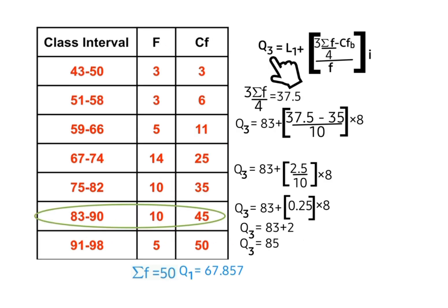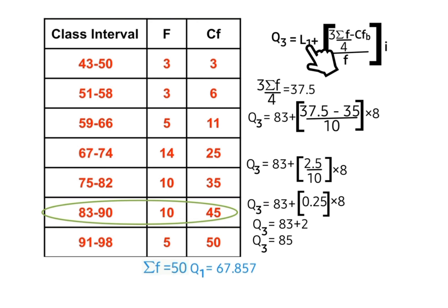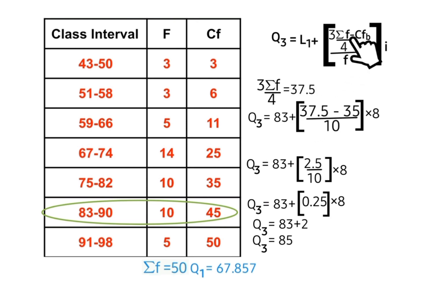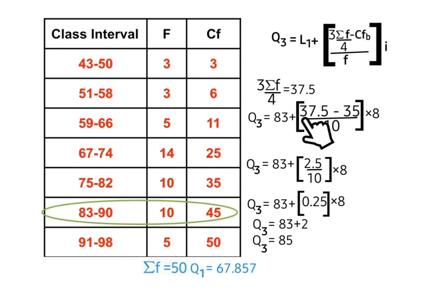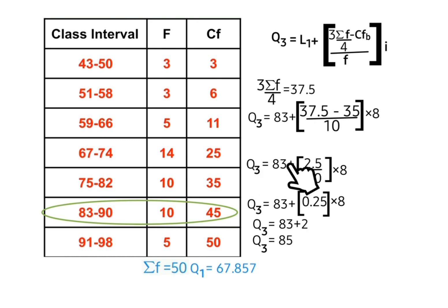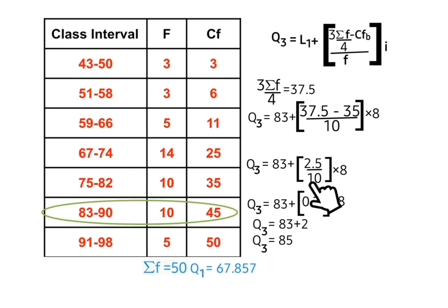Following the formula, L1 — the lower class limit of the third quartile class — is 83. We have: 3 times summation f over 4 equals 37.5, minus the cumulative frequency before the third quartile class, which is 35, over the frequency of the third quartile class, times the class width of 8. That gives: 83 plus (37.5 minus 35), which is 2.5, over 10, times 8. So 83 plus 0.25 times 8.